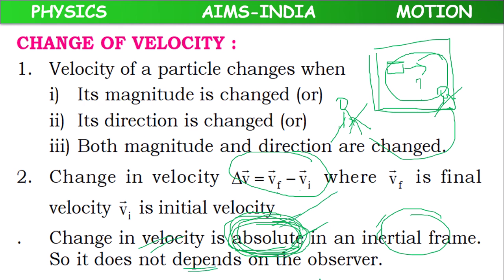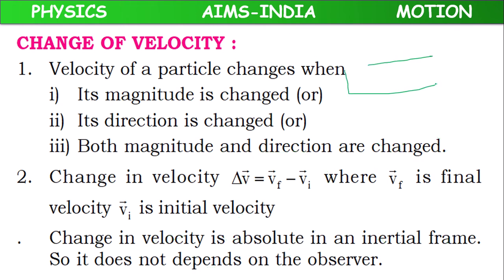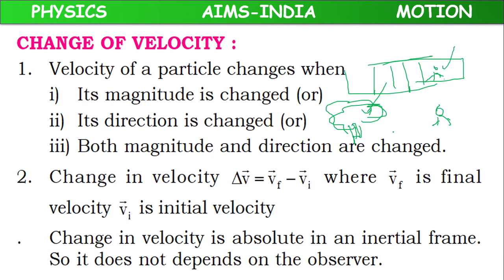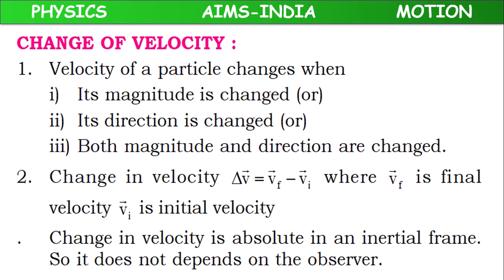Absolute means whose value does not depend on the observer. In some cases, values depend on the observer — those are called relative values. For example, a person moving in a train sees outside trees appearing to move, but a person outside the train sees the trees standing still. Such values are relative. But change in velocity is an absolute quantity — a fixed value that never depends on the observer.